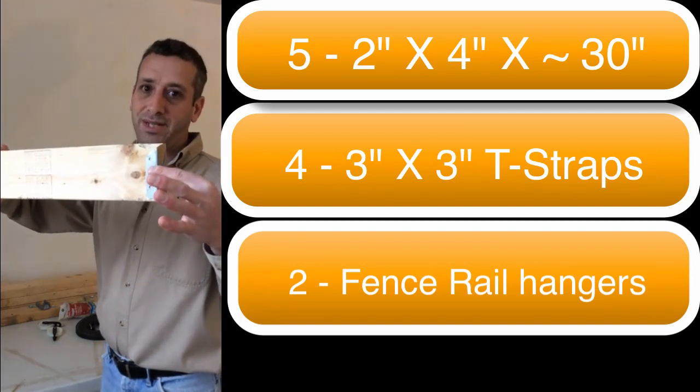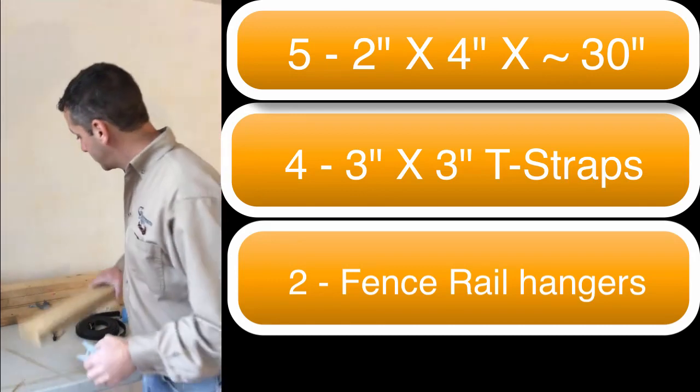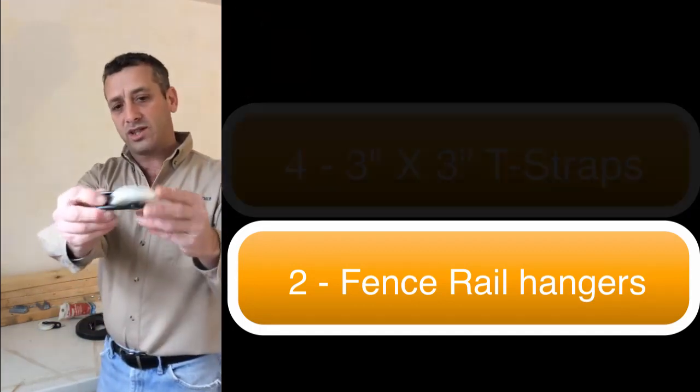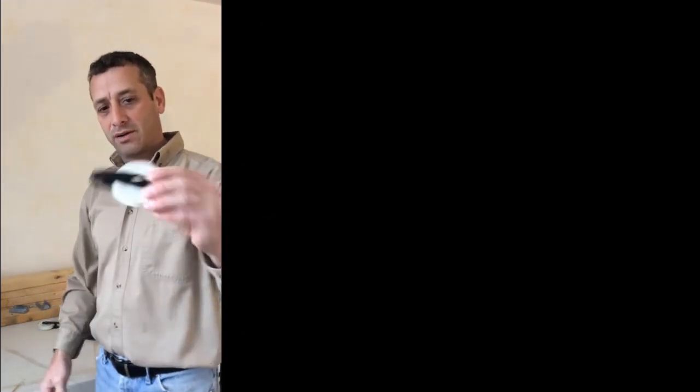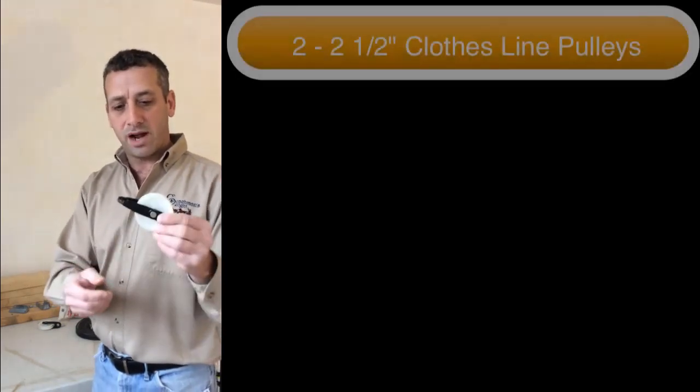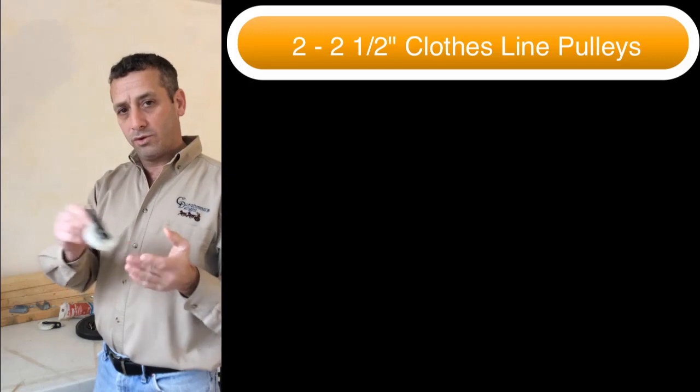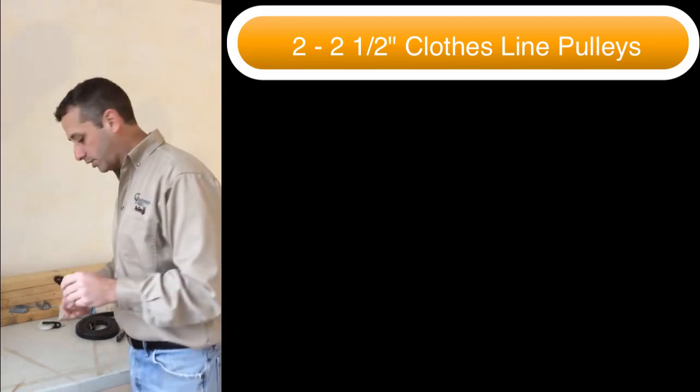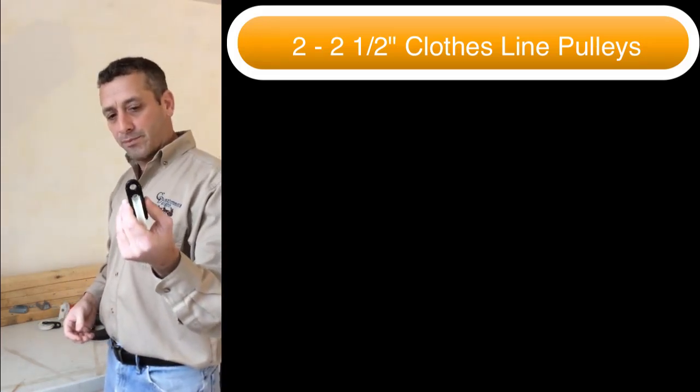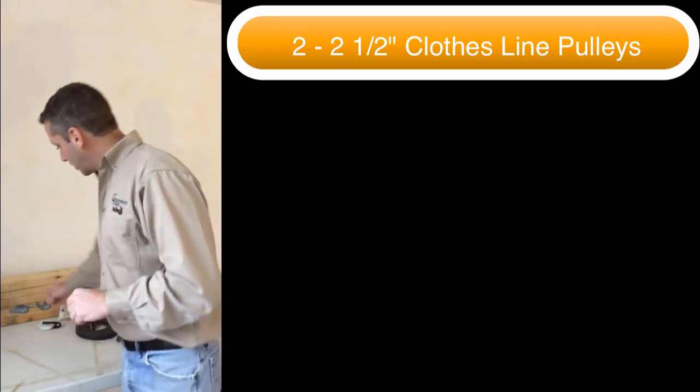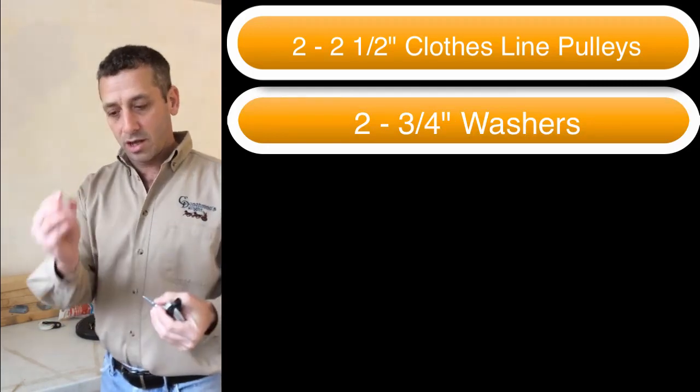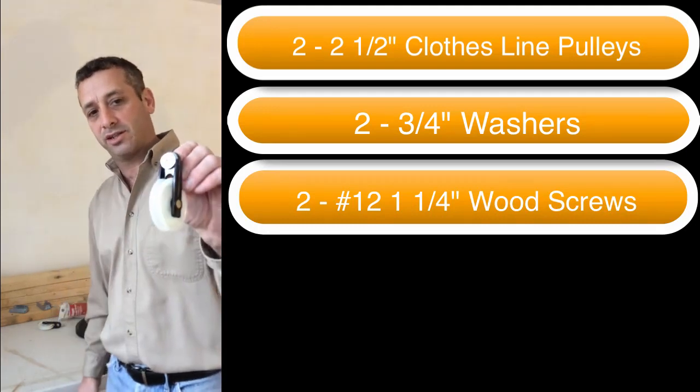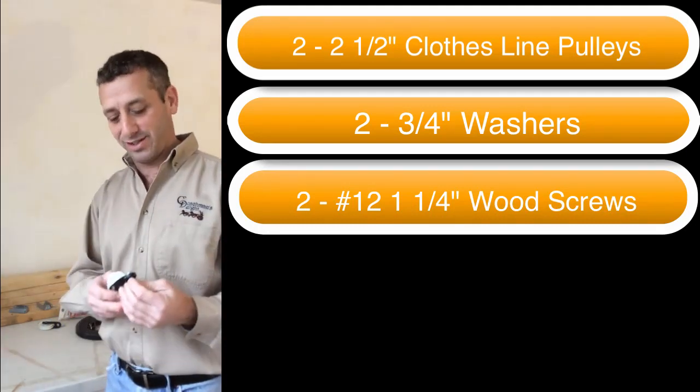Now we need something to hang the weight off of, and these clothesline pulleys, a couple three bucks at your local hardware store, they're nylon, really inexpensive, really smooth operating. Make sure you give that wheel a spin when you're in there so that you grab one that operates really freely. We're going to need to be able to attach these to the crossbar, so what I'm going to use to attach these to the crossbar today is just a washer and a wood screw. I'm going to screw that to the 2x4, very easy to put together. You can use a lag bolt, carriage bolt with a nut, whatever.